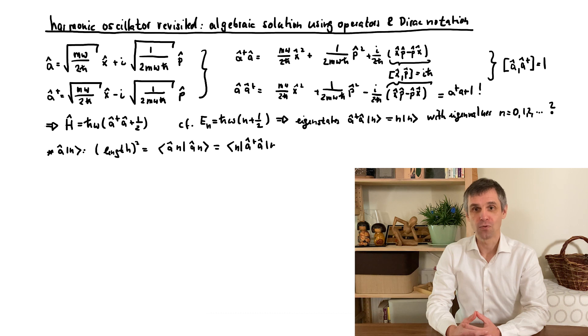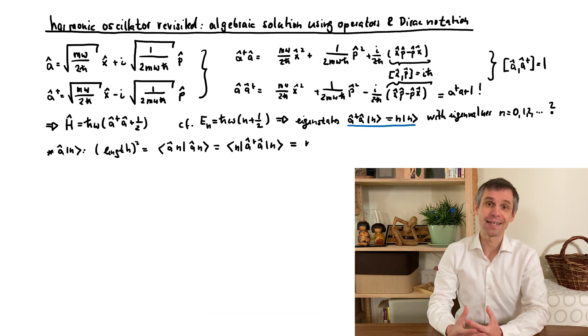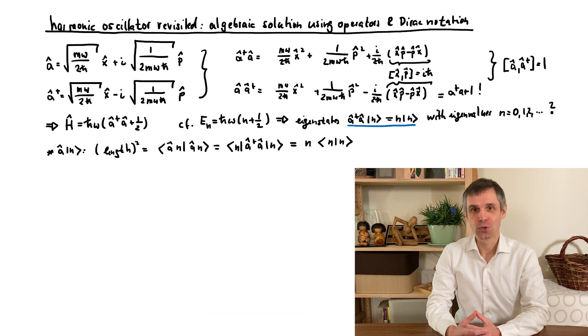Now, by our definition, this really involves the Hermitian conjugated operator A-dagger, and so we get the number operator acting on one of its eigenstates. So given that the original state is normalized, we just get the eigenvalue n.